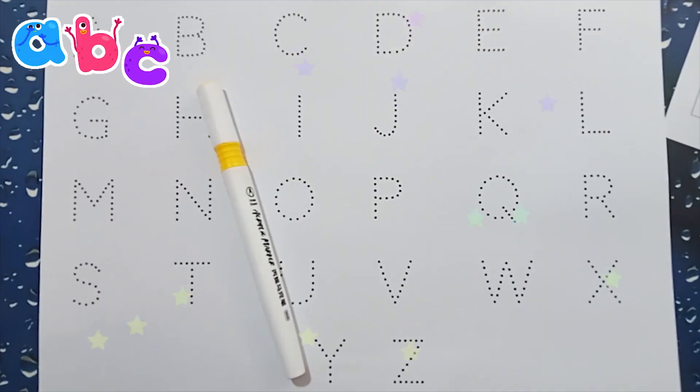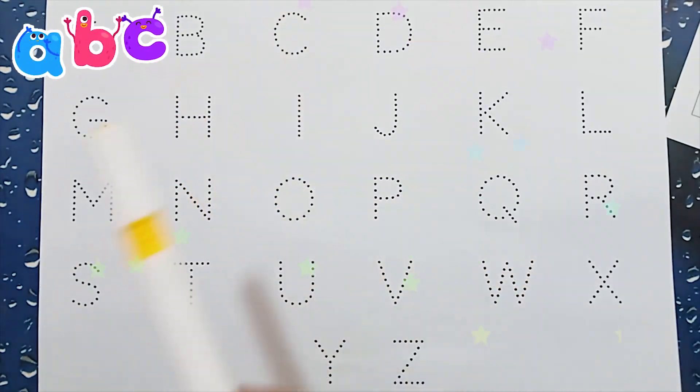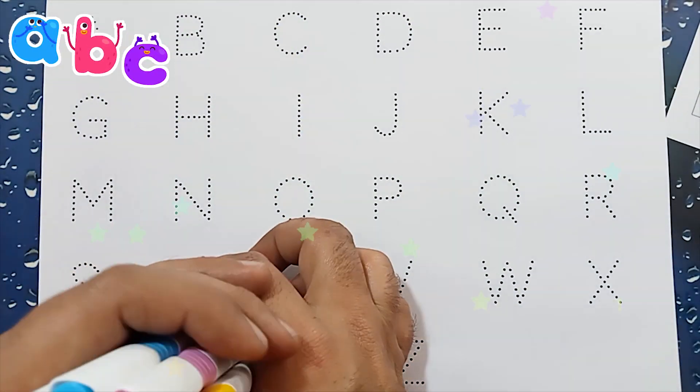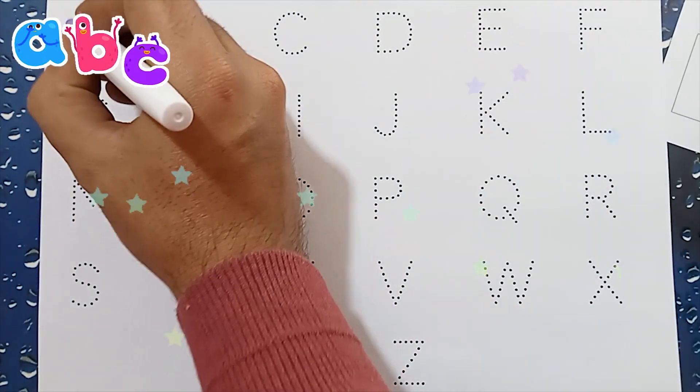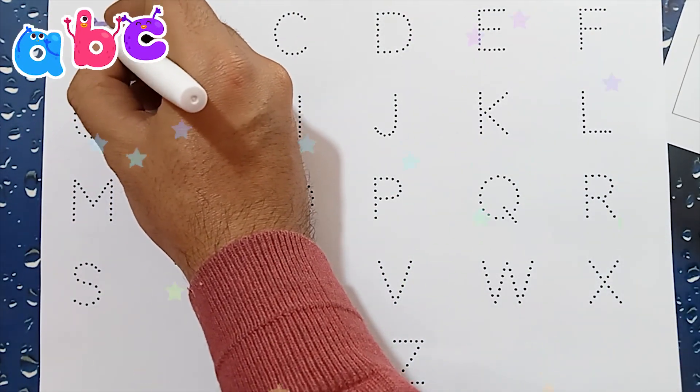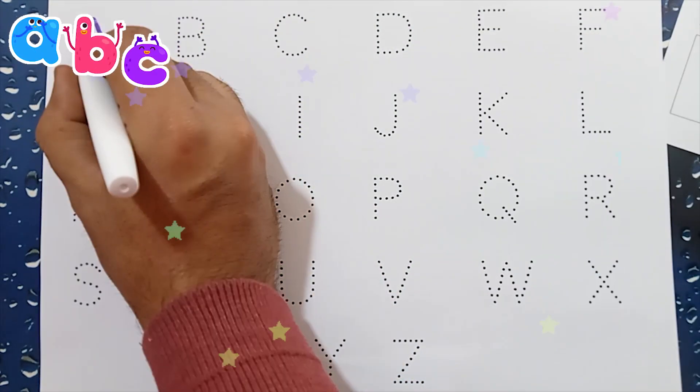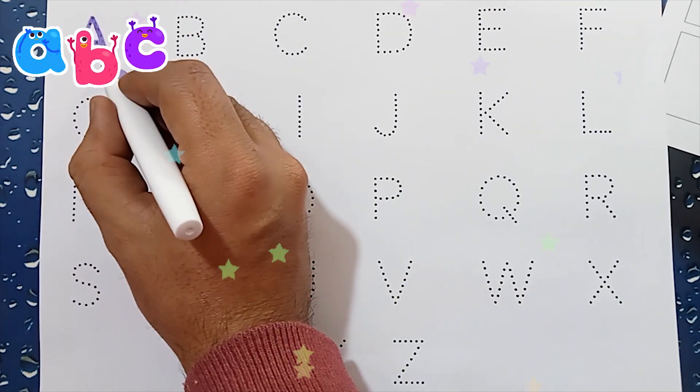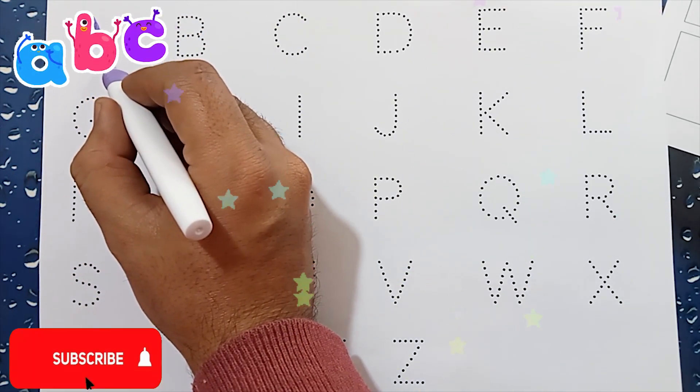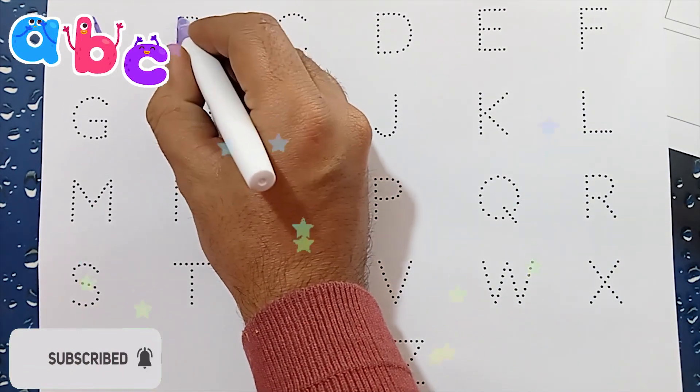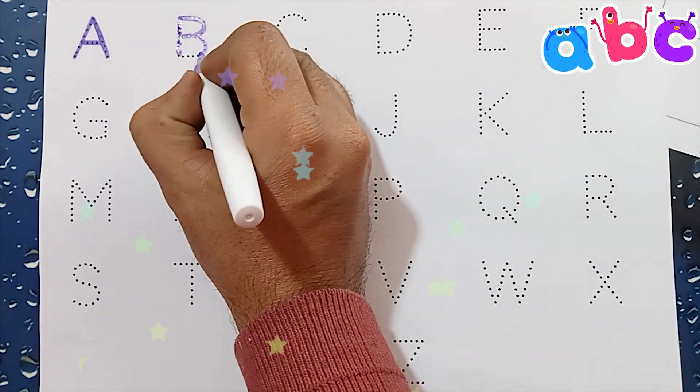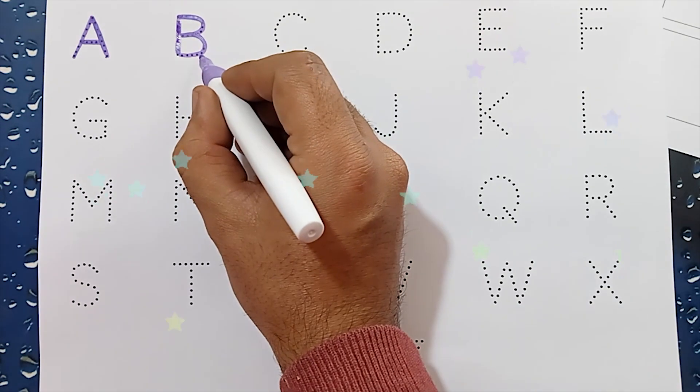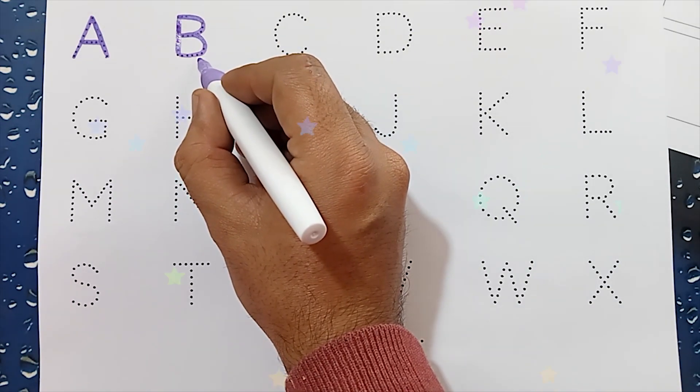Now let's learn alphabets. A, A is for apple. B, B is for banana.